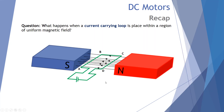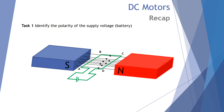What happens when a current-carrying loop is placed within a region of uniform magnetic field? Let's consider this. First, let's identify the polarity of the power supply. We know the larger terminal is always positive and the smaller terminal is always negative. Second, let's identify the direction of the current through the loop. Current moves in the external circuit from the positive terminal around back to the negative terminal.